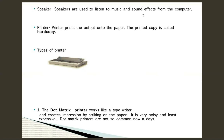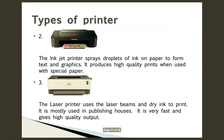There are different types of printers. The first printer is the dot matrix printer, which we used to use in the past. It works like a typewriter and creates an impression by striking on the paper. It is very noisy and less expensive. Dot matrix printers are not so common nowadays because we have different, more advanced printers.